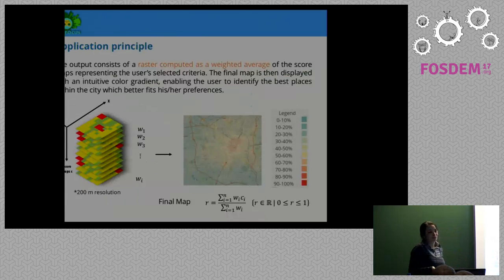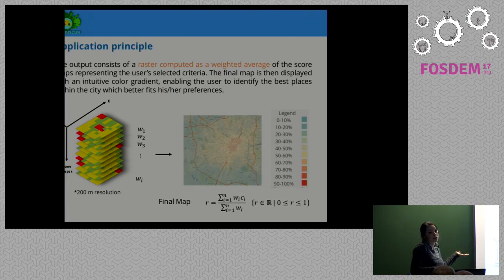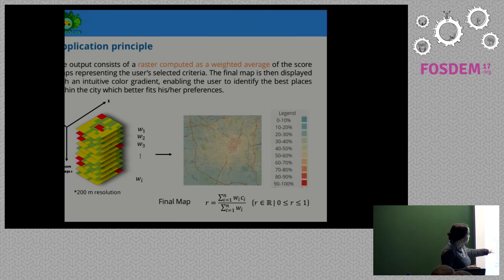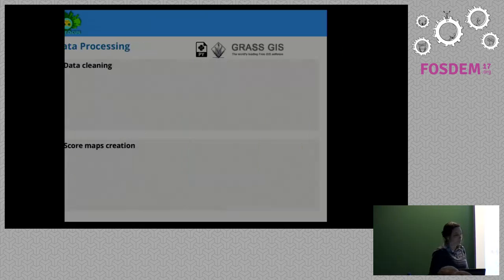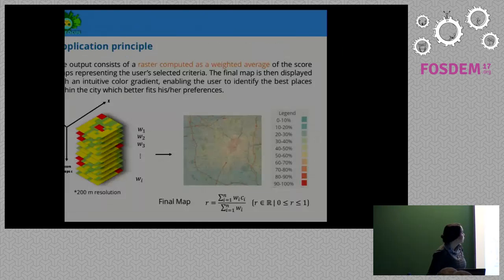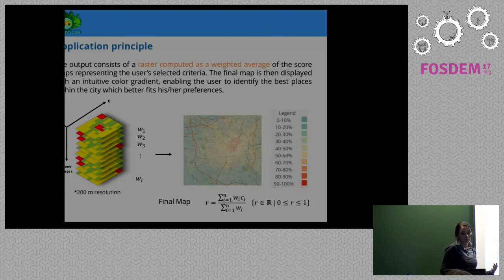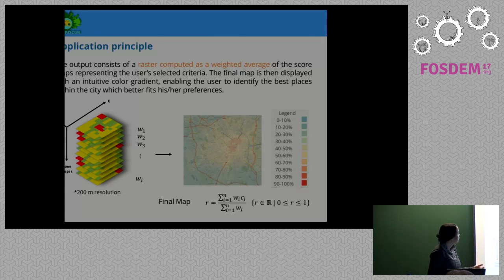The application principle is really simple — it's map algebra. You have different criteria called score maps that go from 0 to 1 (or 0 to 100). You assign weights to the different score maps, sum them, and obtain a final map. Before that, we needed to do data cleaning and data processing once to obtain these score maps, which then went into the application.